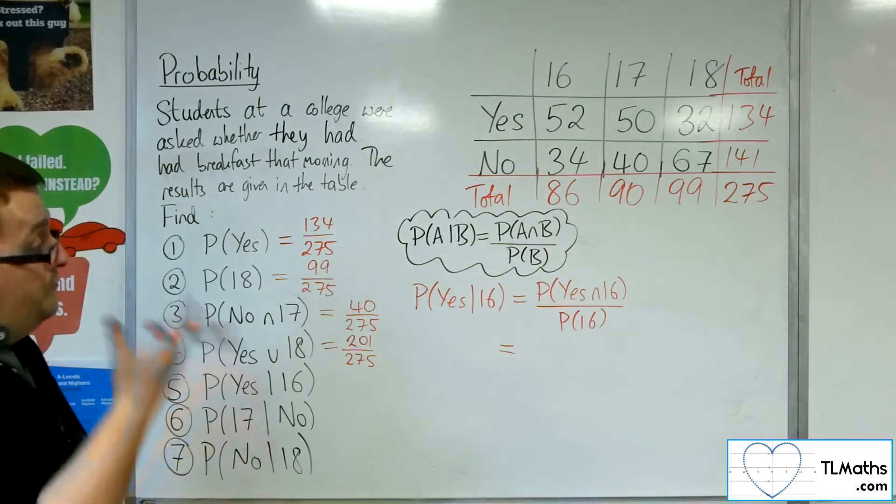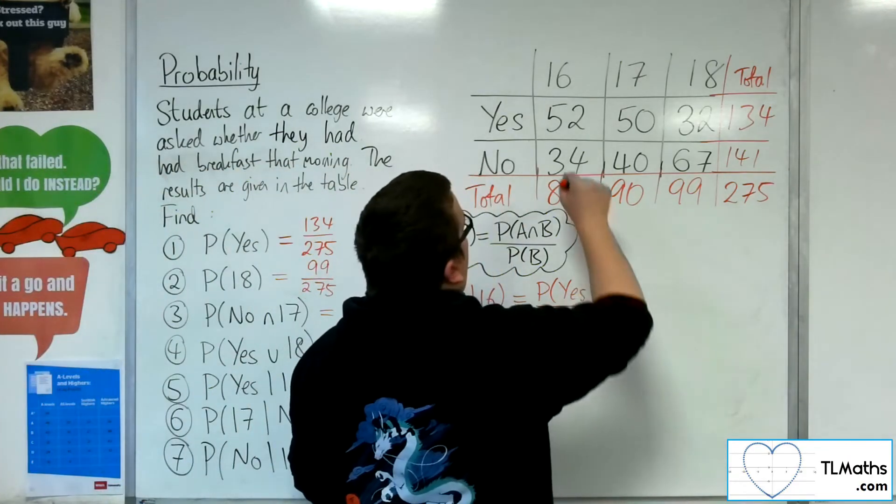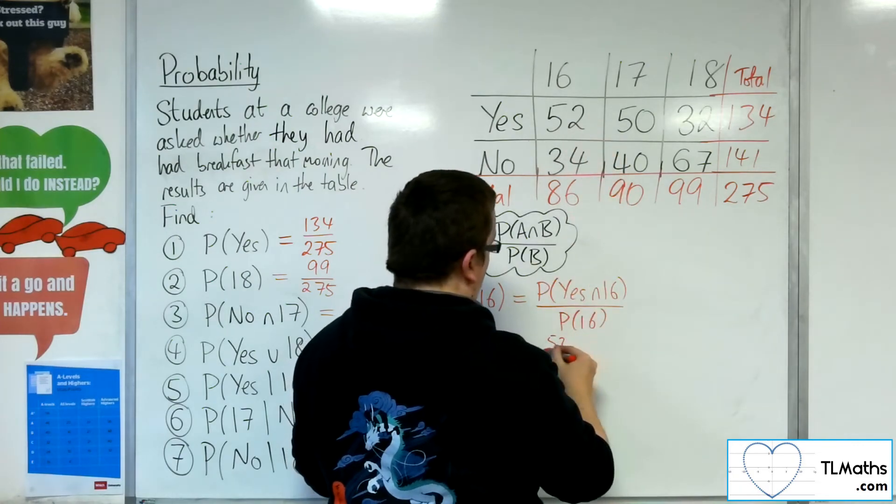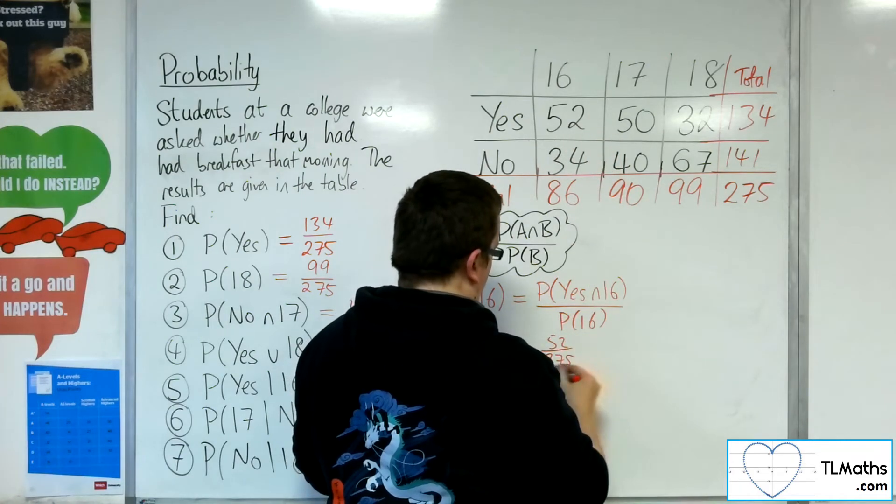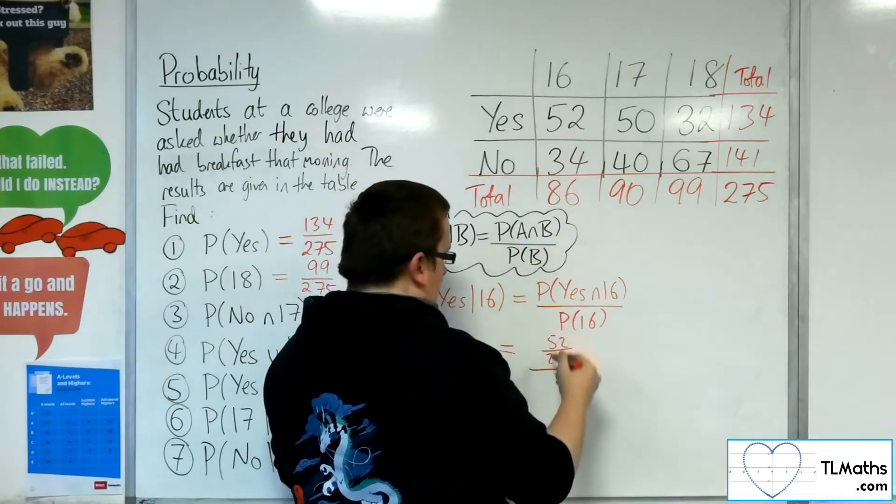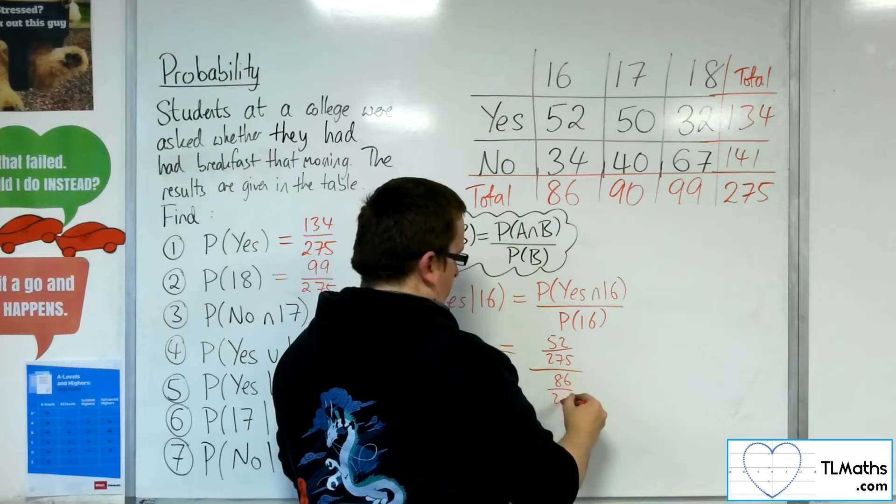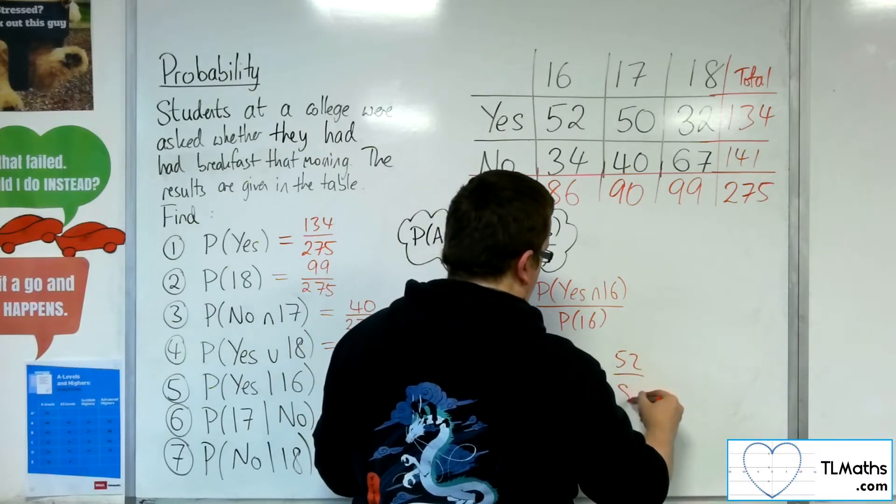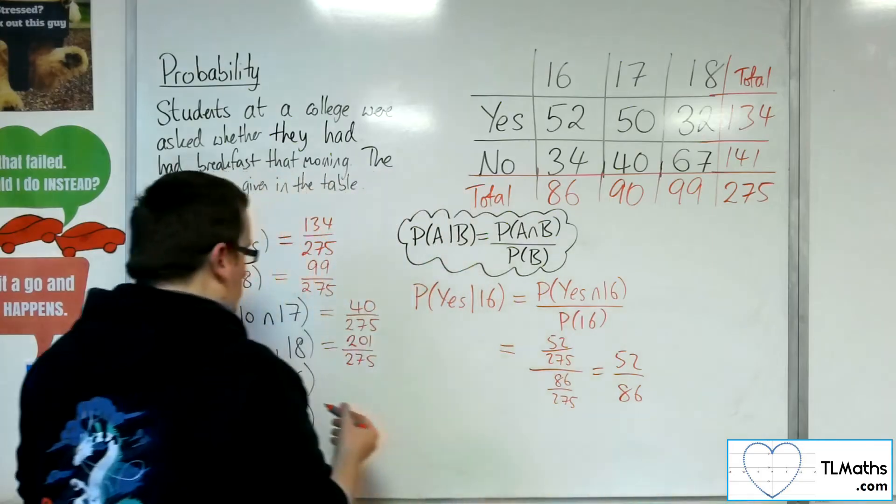Okay, so yes and 16 is 52 out of 275. And probability of being 16 is 86 out of 275. And so that's 52 out of 86. And so that is the correct probability.